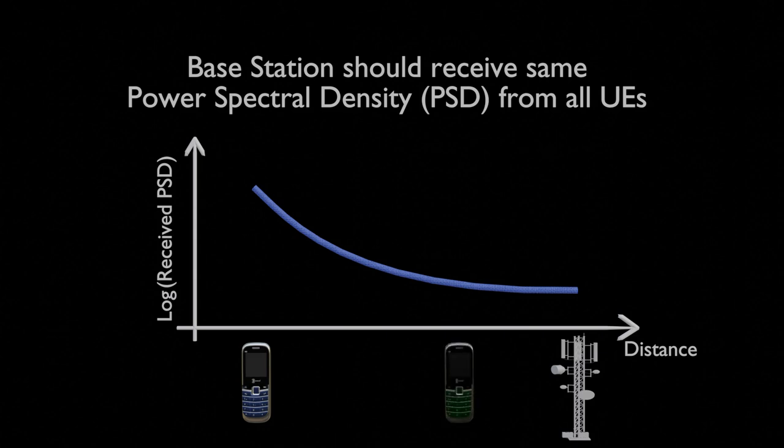If another nearby UE transmits with the same power, then the base station receives higher power, but base station wants to receive same power from all UEs, so the nearby UE should reduce its transmit power. Now, you might be wondering, how does a UE figure out its transmit power so that the base station receives the same power from everyone?